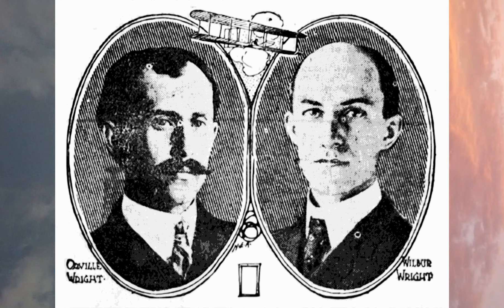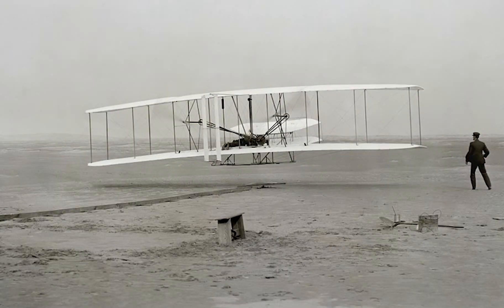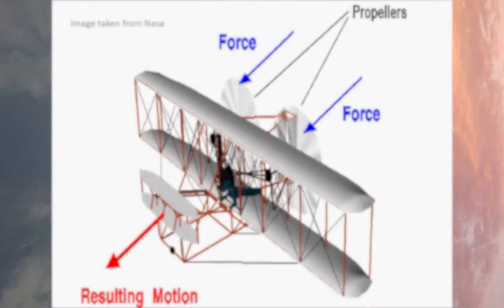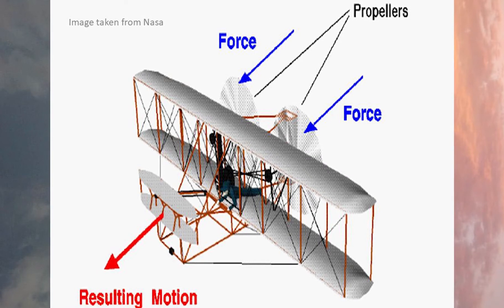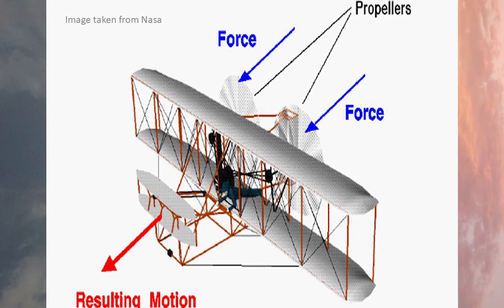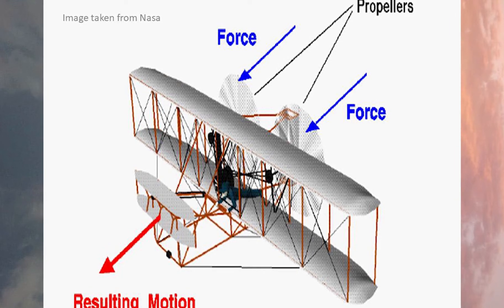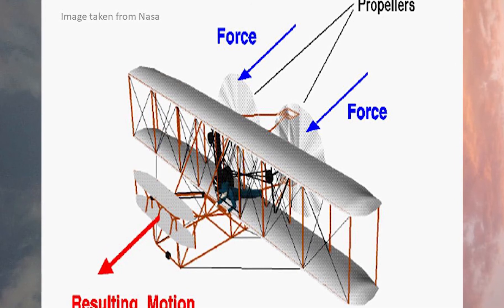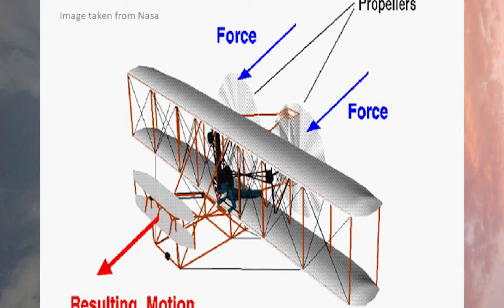Building upon those that came before, two brothers named Orville and Wilbur Wright achieved the first manned and powered controlled flight in 1903. They did this by emphasizing a biplane design, greater control, and more efficient gasoline engines along with thinner and lighter propeller blades to cut through air. They also used two propellers spinning in opposite directions to cancel out the rolling torque, and a launching rail to ensure stability.